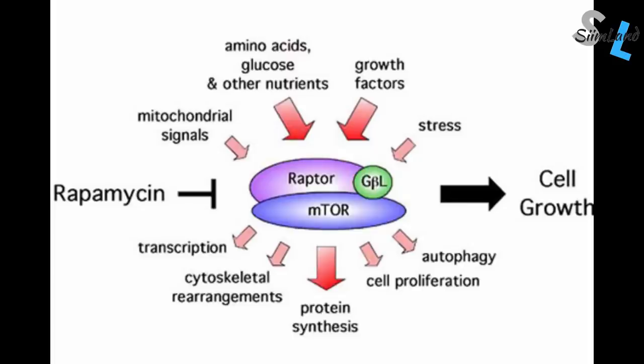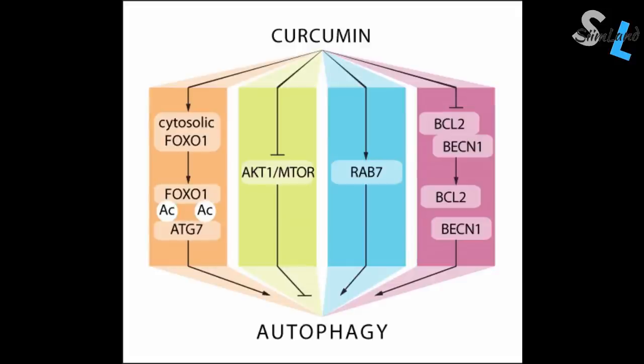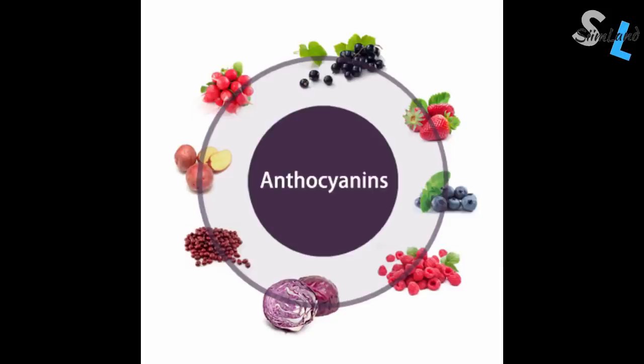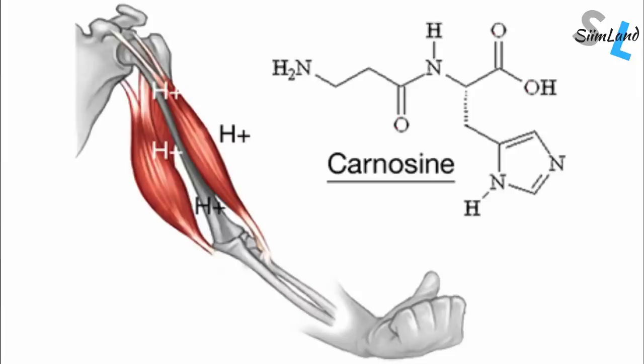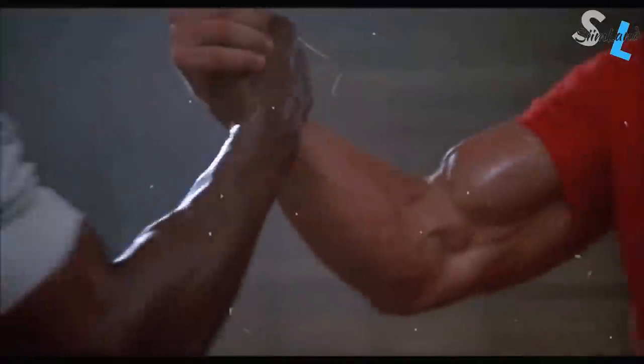Rapamycin is an immunosuppressing drug that lowers mTOR. Curcumin inhibits mTOR signaling in cancer cells. Anthocyanins found in blueberries and grapeseed extract promote AMPK and block mTOR. Carnosine inhibits the proliferation of human gastric carcinoma cancer cells by retarding mTOR signaling. Carnosine is an amino acid with anti-aging and antioxidant benefits.